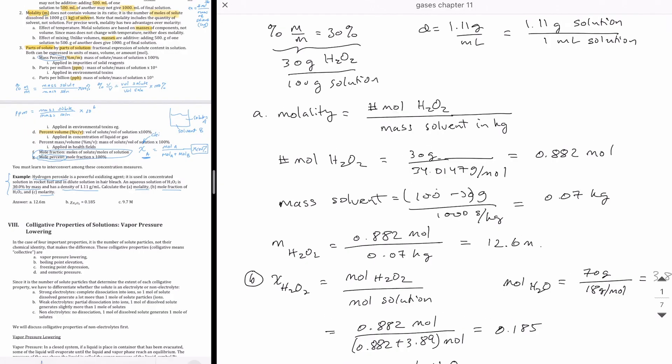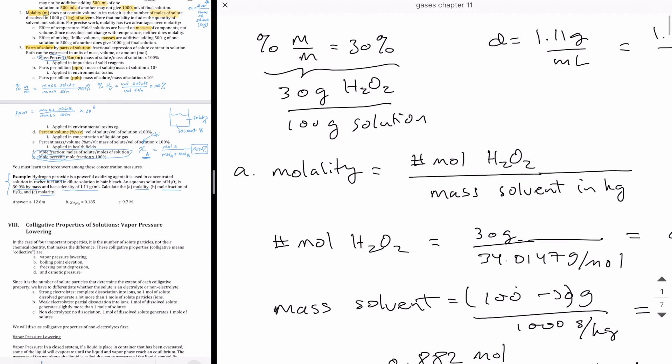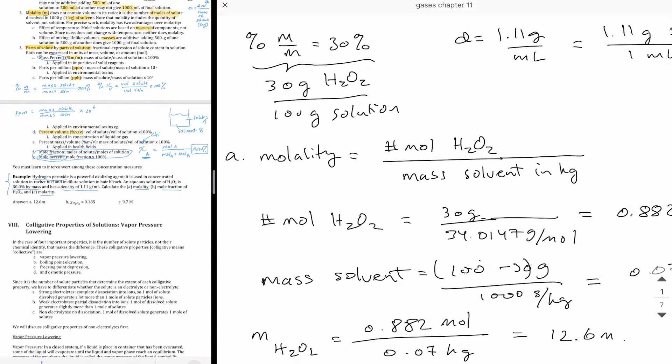So let's take a look on the right, how to solve those problems. So here I'm just writing the information that's given, which is one is the mass percent of the hydrogen peroxide, which is 30% that's given there at the top.